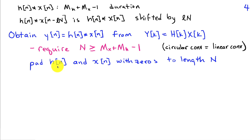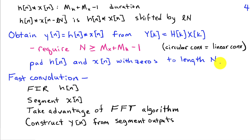In practice, we take h of n and x of n and add zeros to the end of those sequences until we reach length N, then take their DFTs, multiply them, and take the inverse DFT. We've been treating x of n as a finite duration block, but this idea of multiplying coefficients in the frequency domain can be adapted to cases where x of n is a streaming data input. This is referred to as fast convolution.